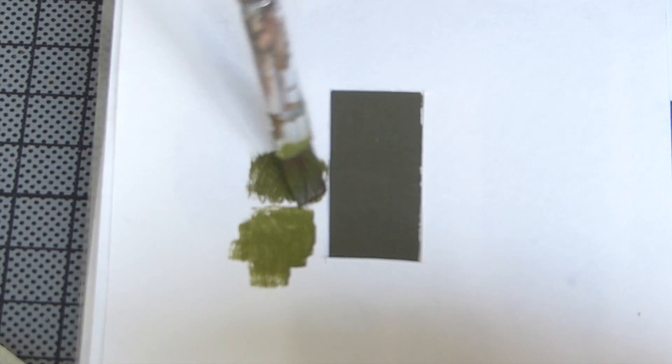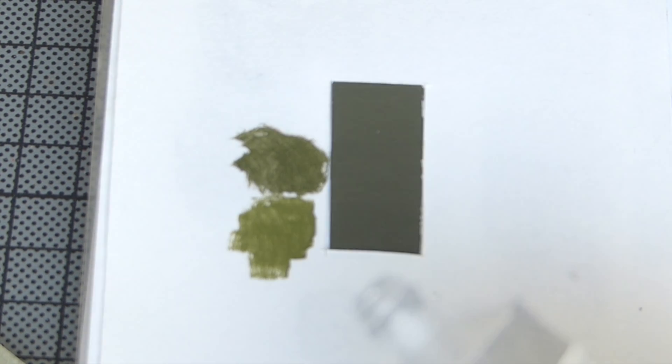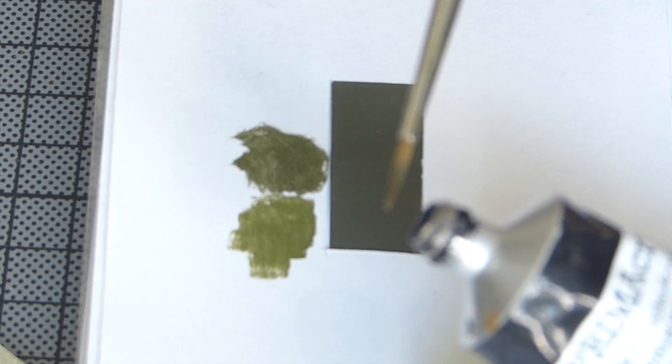Now this looks more like olive green, the olive green camouflage paste of the German army. And we're now going to add one more part of black to darken it even further.